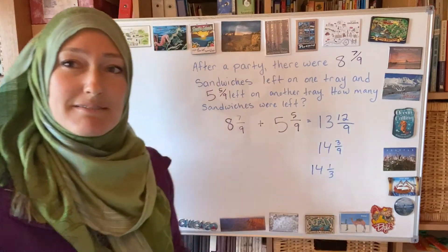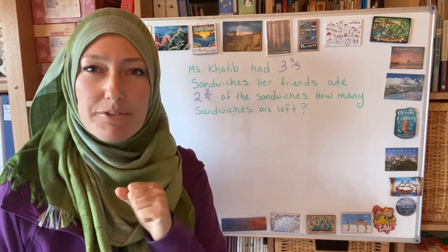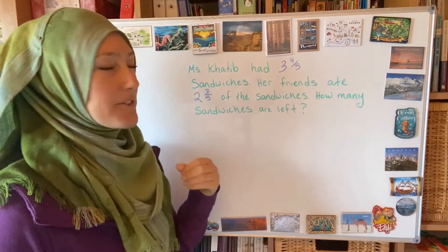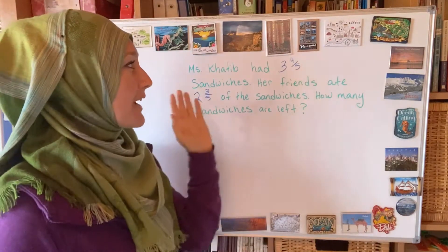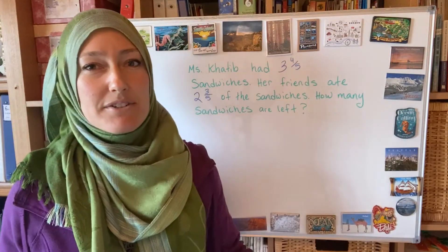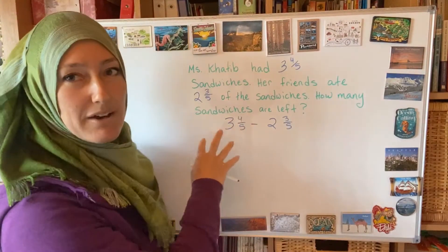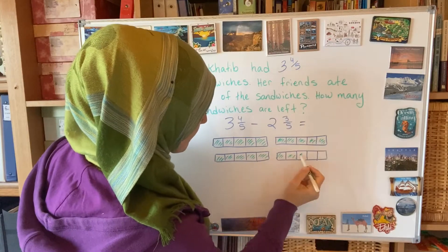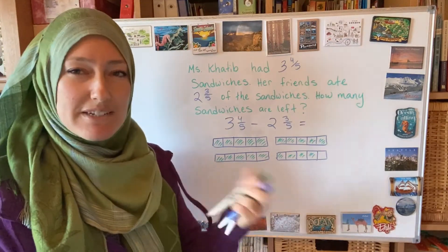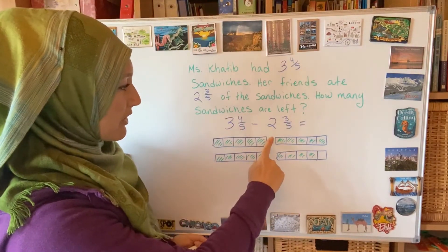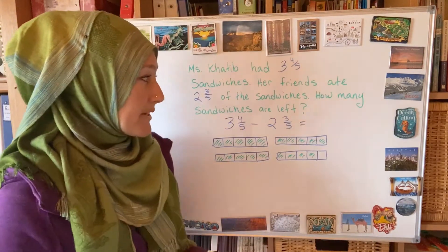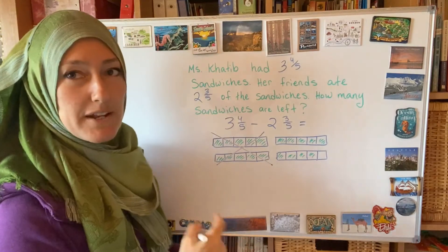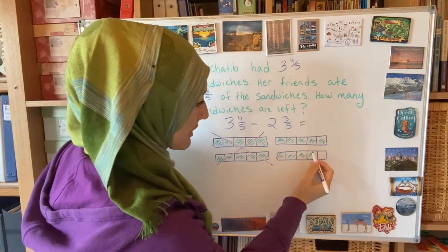We'll try a subtraction one. For this problem, read the question without the numbers first. I had some sandwiches and my friends ate some. How many sandwiches were left? So I had 3 and 4 fifths — friends are going to eat some, I should see that I'm going to be subtracting. I need to model what I have first — always start with what you have. This model shows 3 wholes and 4 out of 5. Then the next part is just taking away what we're subtracting. I'm going to cross out 2 whole ones completely, and then cross out 3 of the parts.